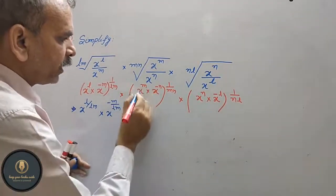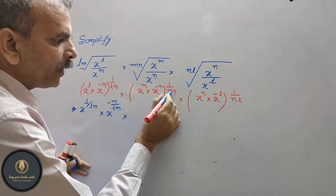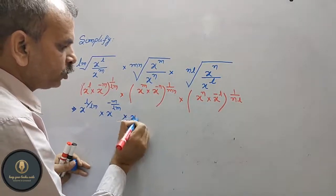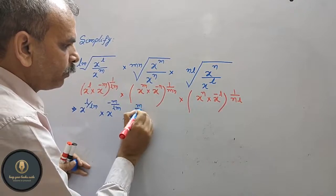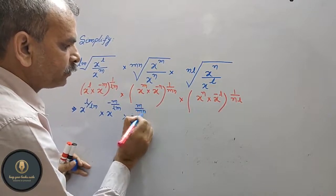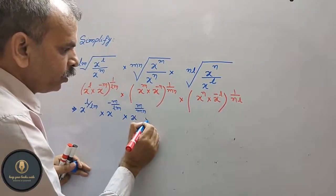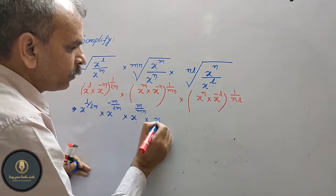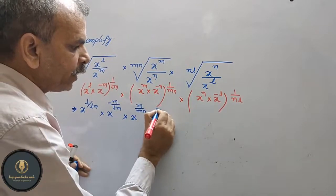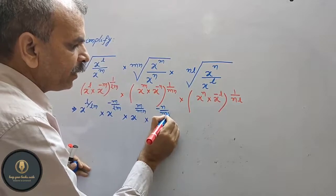Now what comes here? m is here, and mn is here, so it becomes x to the power of m by mn, into x to the power of minus n, which is minus n by ml.